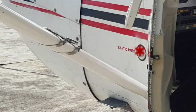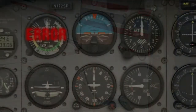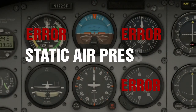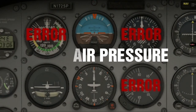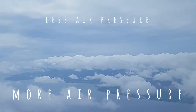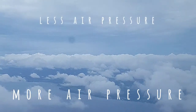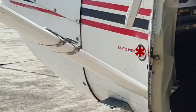A locked static part will result in an error to all three pitostatic instruments, since all of them need static air pressure. If we increase our altitude, the outside air pressure will be less, but this change won't be detected by the static part, giving us inaccurate static pressure information.